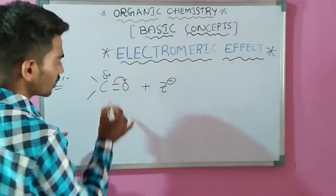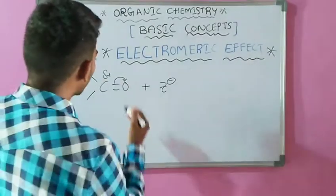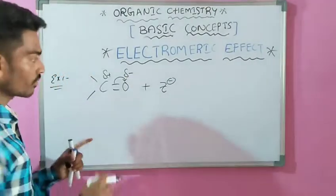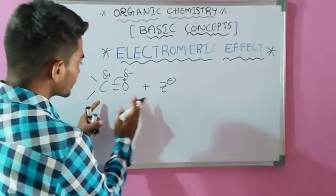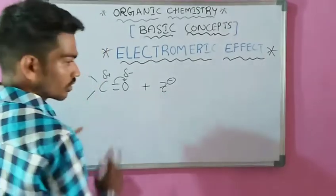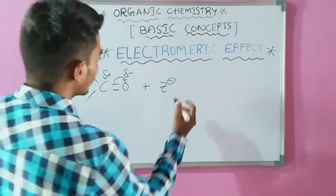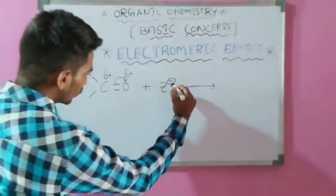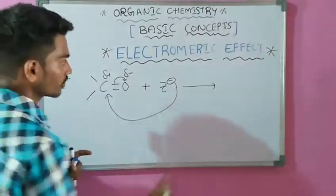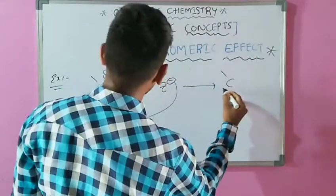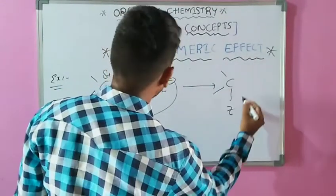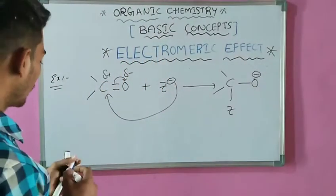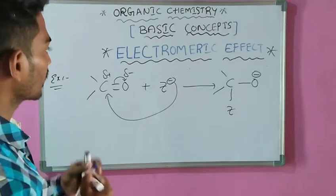Here, delta positive and delta minus charges take place. Charge dispersion takes place whenever this nucleophile attaches or comes closer to this carbonyl compound. Then it forms this type of reaction. At that time, this nucleophile is attacking this carbon atom, then it forms this type of reaction. This is the Electromeric effect.